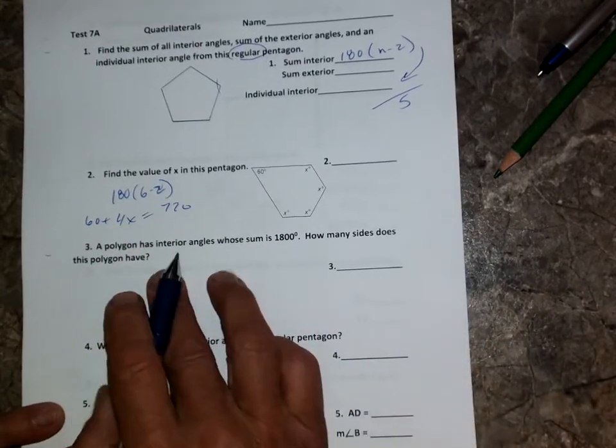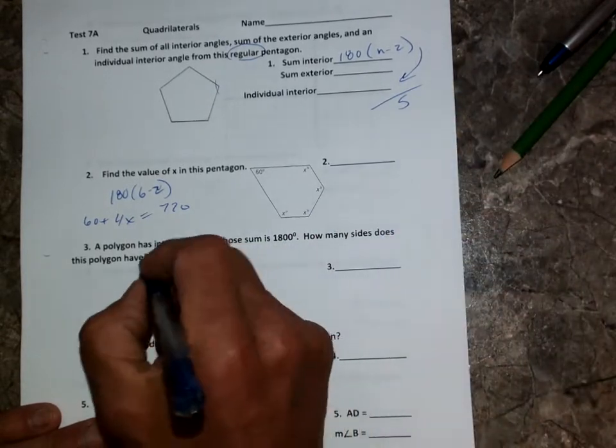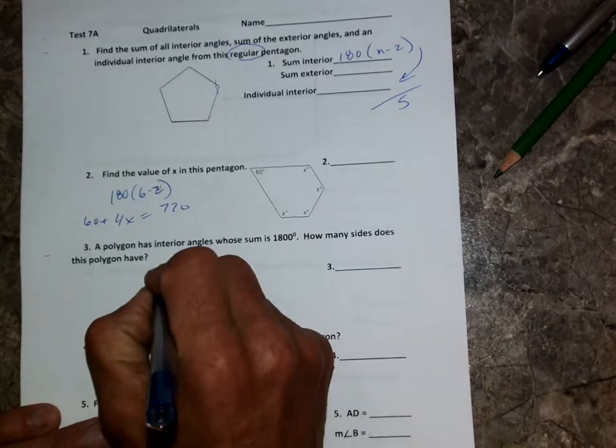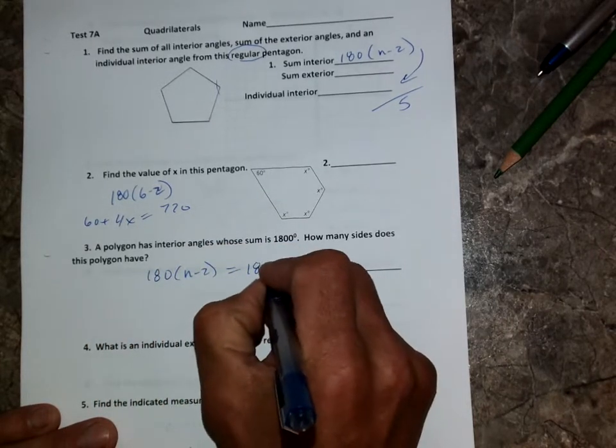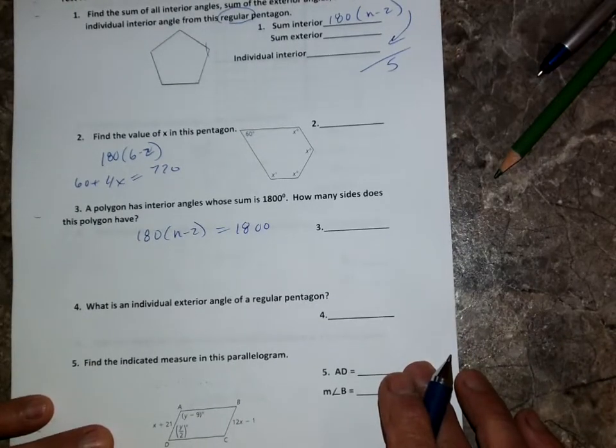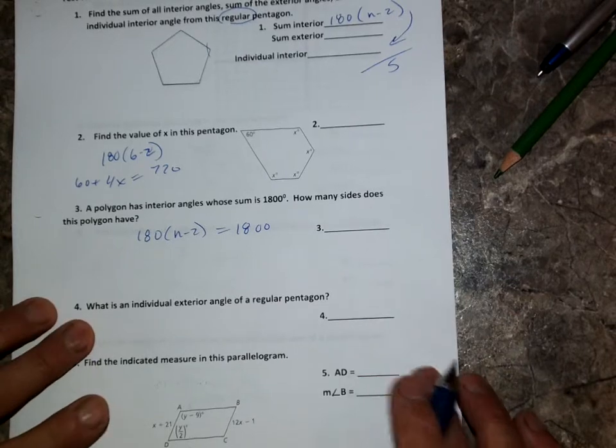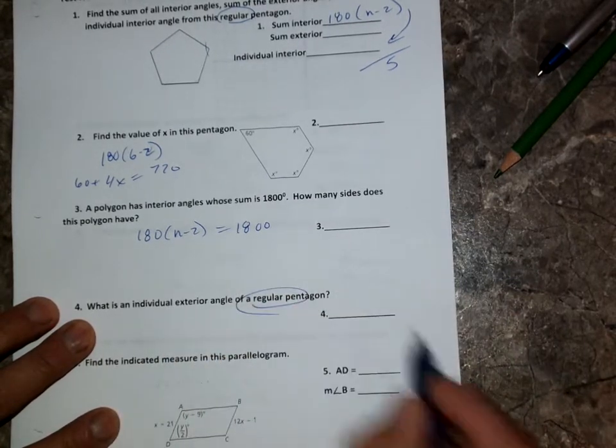Three, a polygon has a sum, so we're going to use this formula here. We're going to take our 180 times our n minus two, and we're going to set it equal to our 1800, and we're just going to solve for the value of n. For what is an individual exterior angle of a regular pentagon, we know that we're going to take 360 and divide by five.